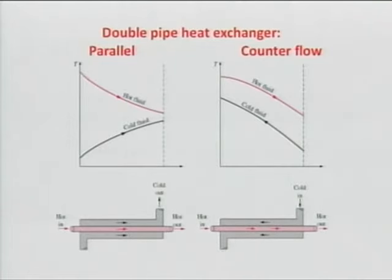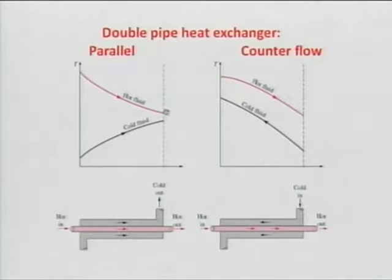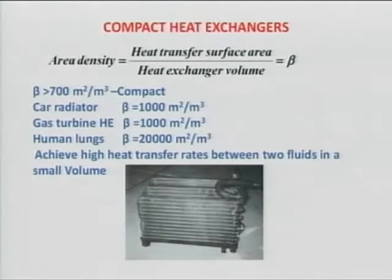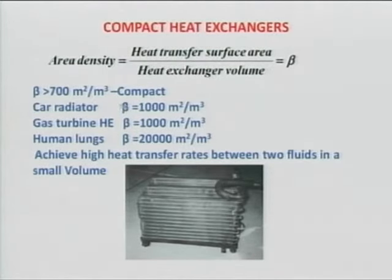Now, parallel flow and counter flow — all of us know. This is T_HI, T_HO, T_CI, T_CO for both configurations. Regarding compact heat exchangers: the area density beta is the heat transfer surface area per heat exchanger volume. These are the typical values for various heat exchangers. For a car radiator, beta is around 1000. Whenever beta is above 700, it is called a compact heat exchanger.